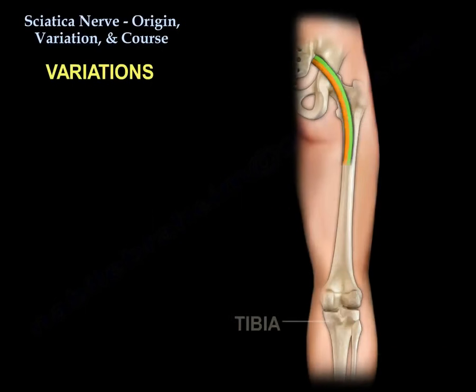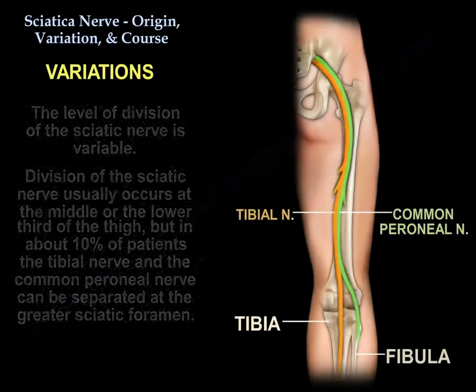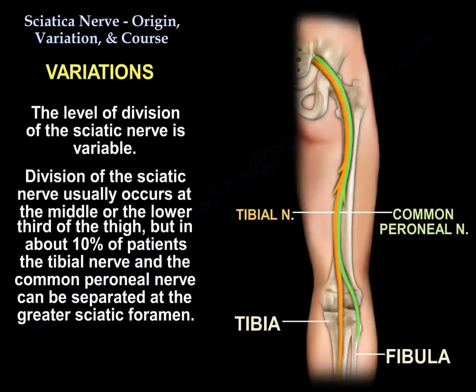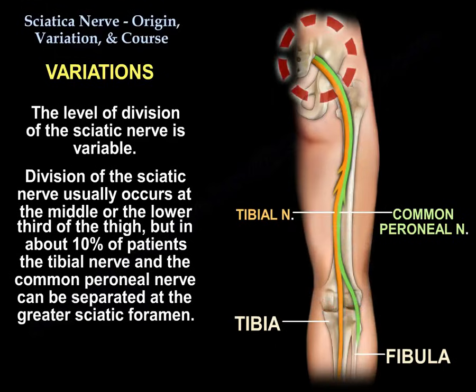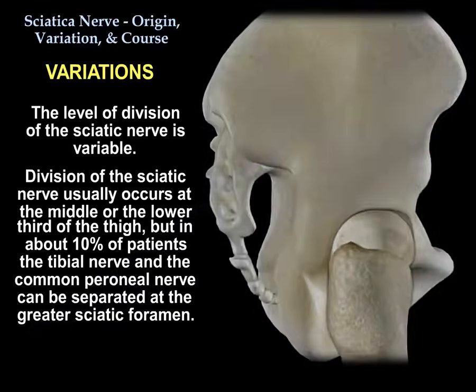Variation of the sciatic nerve. The level of division of the sciatic nerve is variable, usually occurring at the middle or lower third of the thigh, but in about 10% of patients, the tibial nerve and the common peroneal nerve can be separated at the greater sciatic foramen.